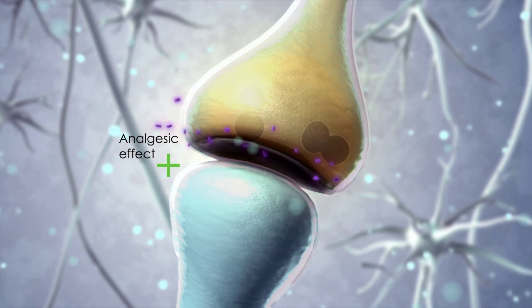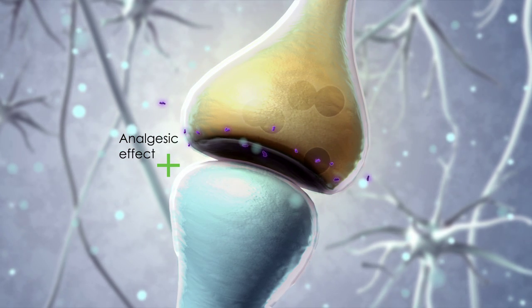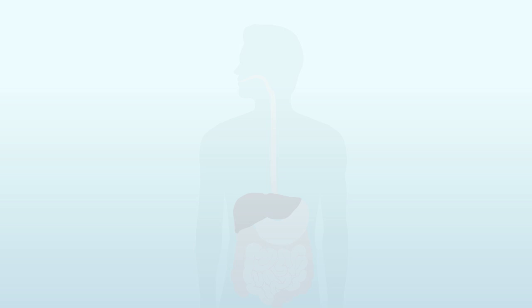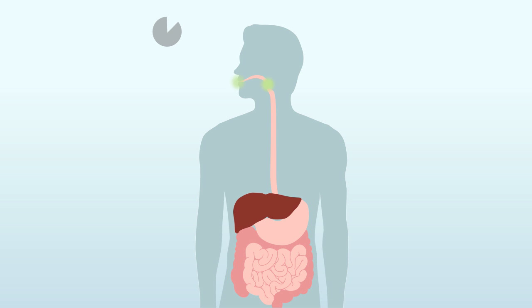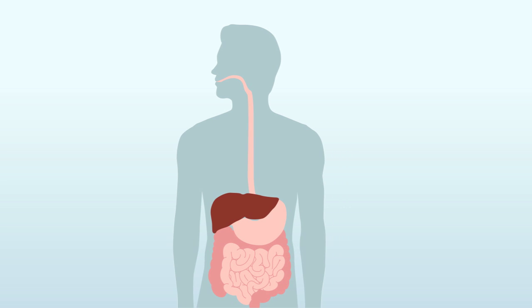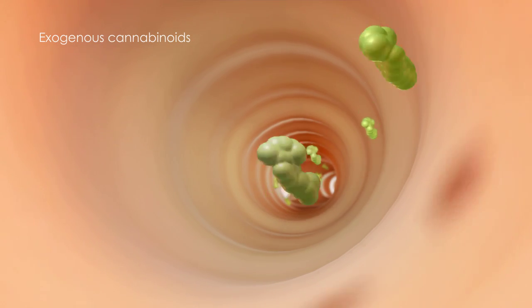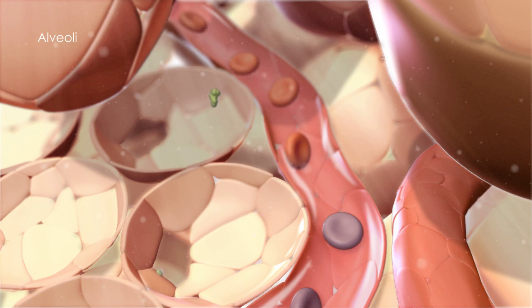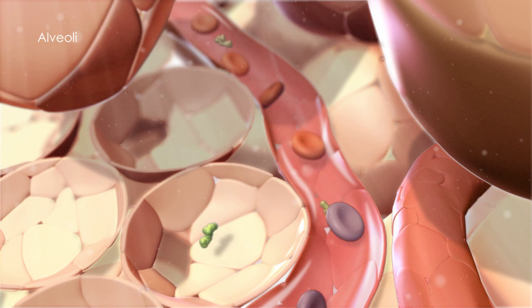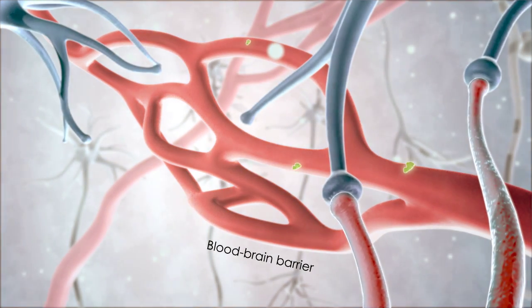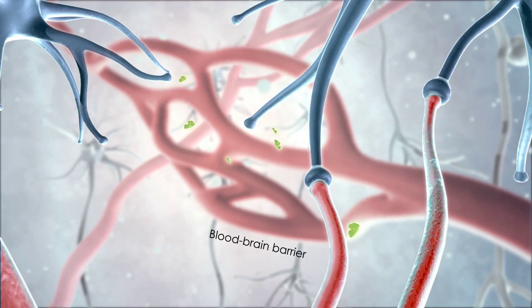The administration of exogenous cannabinoids orally or through inhalation may therefore provide an option for treating pain that has responded poorly to conventional pain therapy. When exogenous cannabinoids are administered orally, they travel via the GI tract to the liver where they are metabolized before entering the bloodstream and then the CNS. The onset of action from oral administration is less rapid compared to the inhaled route. When exogenous cannabinoids are inhaled, they travel through the respiratory tract to the alveoli of the lung where they diffuse rapidly into the circulatory system, then travel through the bloodstream towards the CNS where they diffuse across the blood-brain barrier and into the surrounding tissues of the brain and spinal cord.